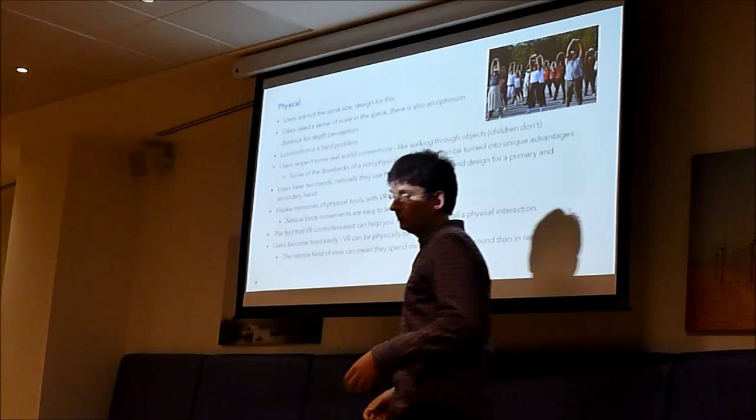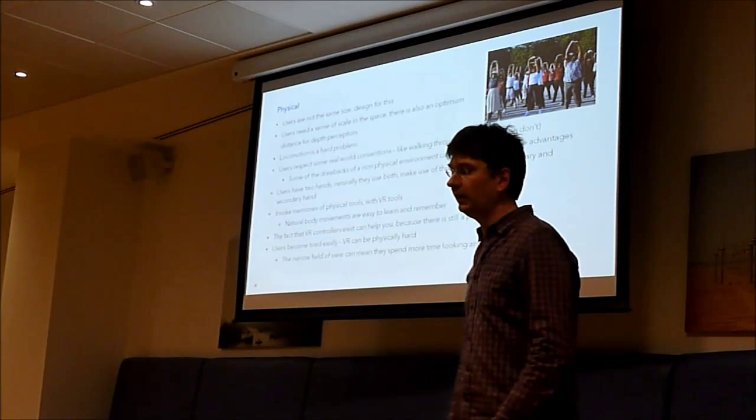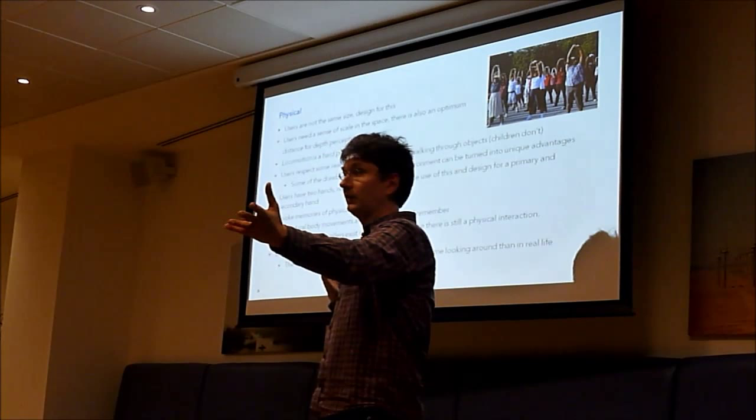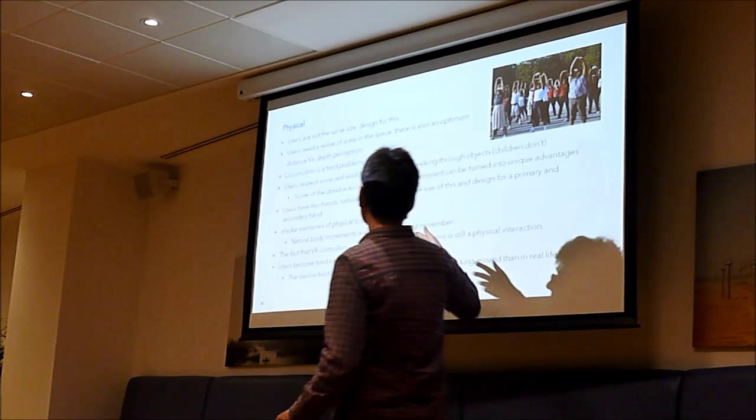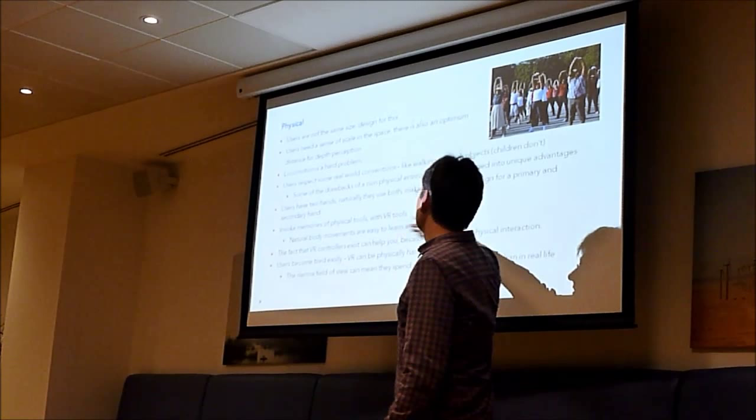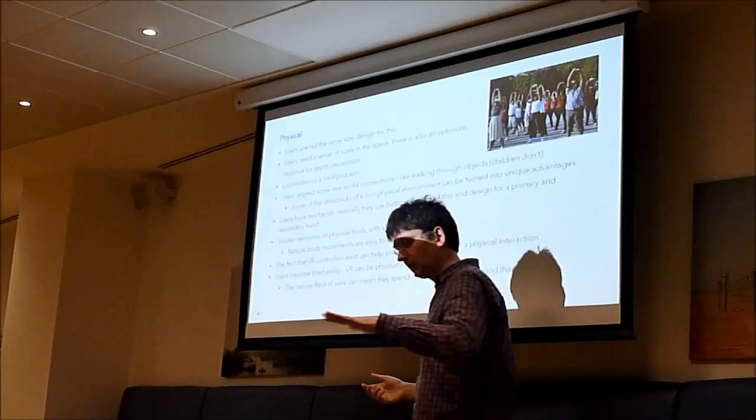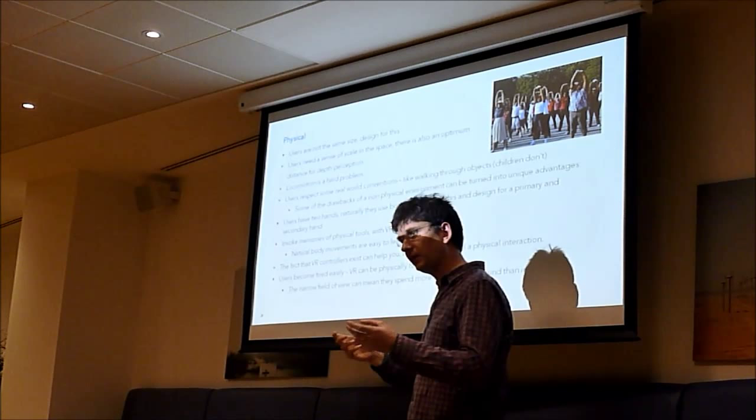Users have two hands. They naturally use both in doing tasks. You can make use of that in your controllers and interactions. Design for primary and secondary hands - people prefer one hand and the secondary does something else. Invoking memories of physical tools - to work in a virtual environment, people invoke muscle memory. A shooting game with an archery bow - it's very natural to load like that. We're used to doing it. People will learn that mechanism. Use these natural ways of interaction. This makes interfaces very easy to learn and remember. The fact that VR controllers exist can help - you get physical feedback. And that's important.